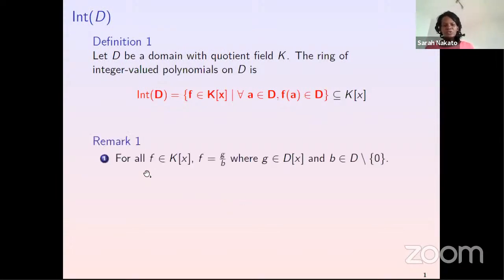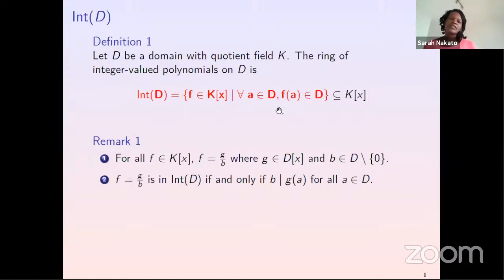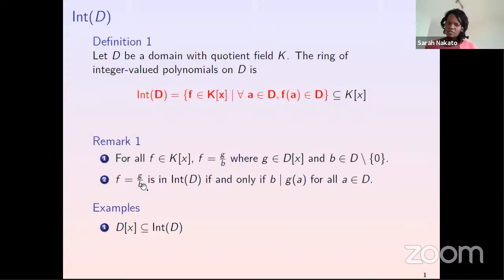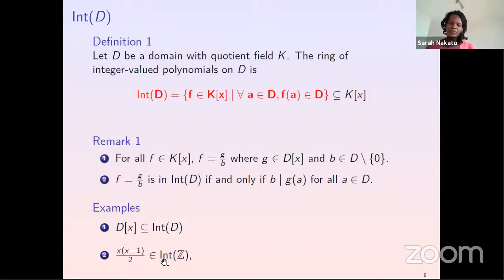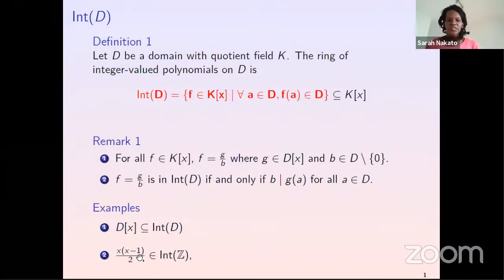So which elements of K[X] are in Int(D)? We can always write a polynomial with coefficients from K as a quotient G over B, with G in D[X] and B non-zero. Written in such a form, F is in Int(D) if and only if B divides the images G(a) for all a in D. For example, the polynomial X(X-1)/2 is in Int(Z). Pick an even integer — substitute it, this will be even. When you pick an odd integer, X times X minus 1 gives an even as well. So any integer you pick, the image is divisible by 2.